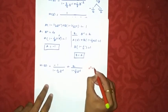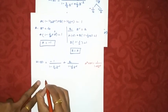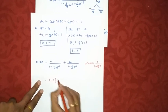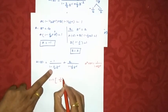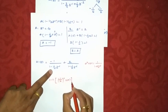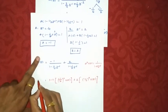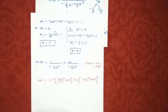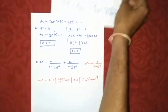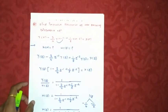Substituting A = −1 and B = 2: H(z) = −1/(1 − (1/4)z⁻¹) + 2/(1 − (1/2)z⁻¹). Since no ROC is given in a difference equation, by default we assume a right-sided (causal) sequence. Using the identity aⁿ·u(n) ↔ 1/(1 − az⁻¹), the impulse response is h(n) = −(1/4)ⁿ·u(n) + 2·(1/2)ⁿ·u(n). Thank you.